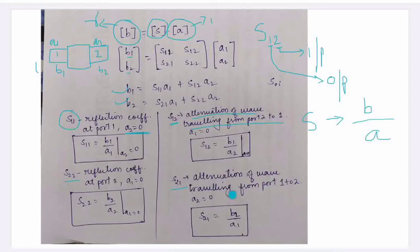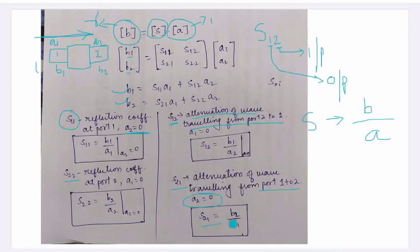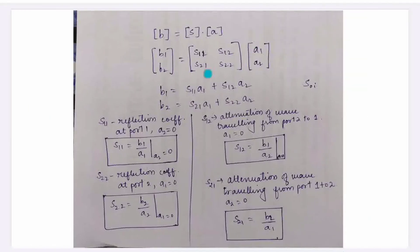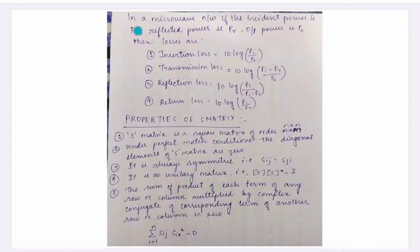S21 is the attenuation of the wave traveling from port P1 to port 2, and its equation is B2 divided by A1 when A2 is 0. In a microwave network, incident power is PI, reflected power is PR, and output power is P0. We have four types of losses.